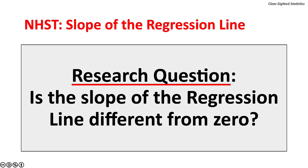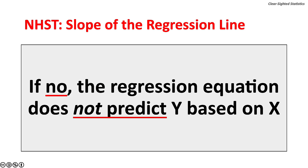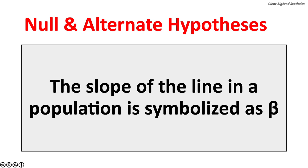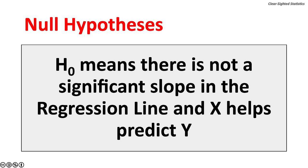There is a null hypothesis significance test for the slope of the regression line. The research question: is the slope of the regression line different from zero? If the slope is different from zero, the regression equation predicts Y based on X. If it is not different from zero, the regression equation does not predict Y. The slope of the regression line in a population is symbolized as beta. Null hypothesis: beta equals zero — the independent variable X does not predict Y. Alternate hypothesis: beta does not equal zero — X predicts Y.